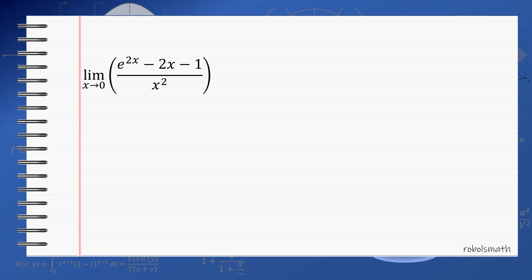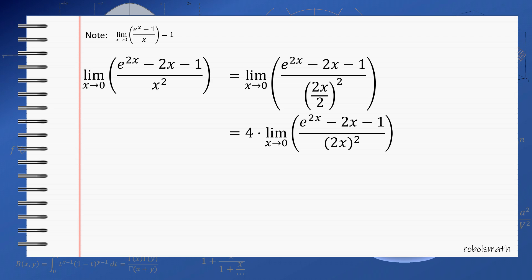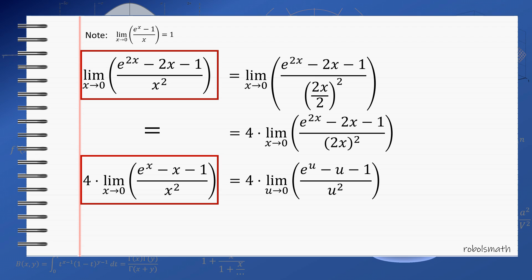So the objective now is to rewrite the expression in terms of 2x. In doing so, we write the denominator as 2x over 2, then quantity squared. Note that if we simplify this, we can take out the factor of 4. Next, if we use the substitution u equals 2x, we get an expression equal to e to the u minus u minus 1 over u squared as u over 2 approaches 0. Note that u over 2 approaches 0 if and only if u approaches 0. Therefore, we can just change the limit and simplify it to u approaching 0. Hence, the limit of e to the 2x minus 2x minus 1 over x squared is equal to the limit of e to the x minus x minus 1 over x squared then times 4.